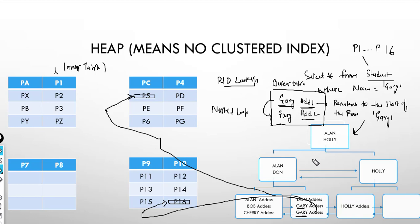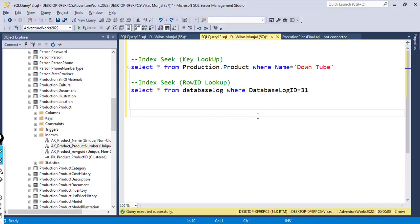In the key lookup case, Gary was at key position two and key position five — those keys were looked up in the clustered index. But in row ID lookup, there are straight addresses pointing to the start of the row in the heap. Both these examples will now be demonstrated with queries.